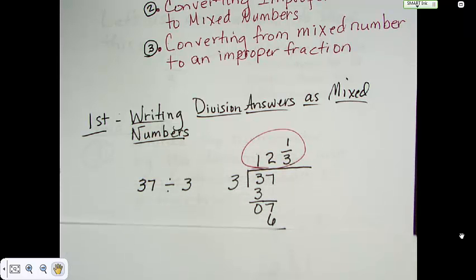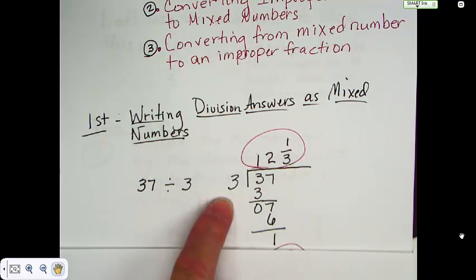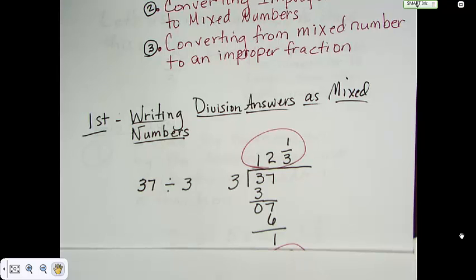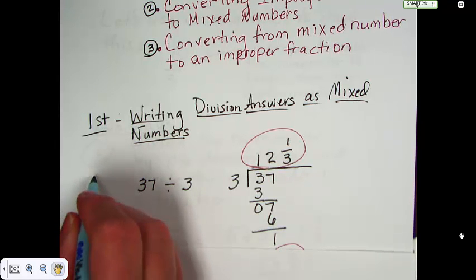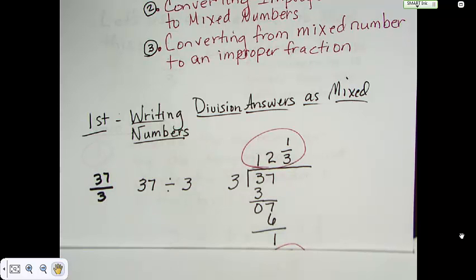So here's our first one. We took 37 divided by 3. 37 goes in the box, 3 goes on the outside. If you were going to write this so it looked like a fraction to start with, it would look like this: 37 divided by 3.